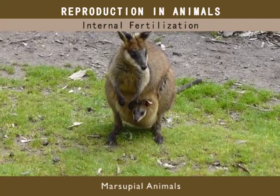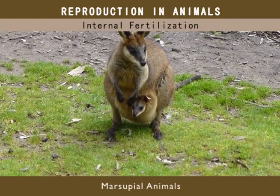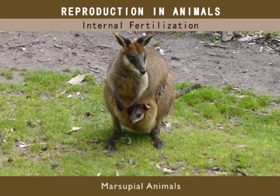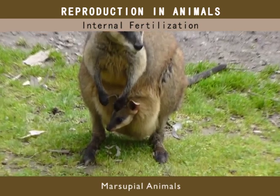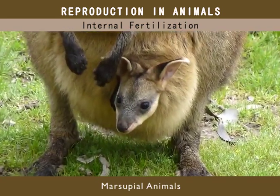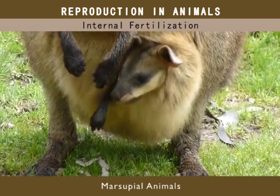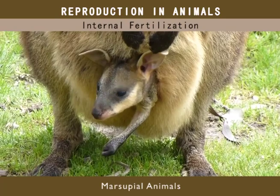Marsupials such as the kangaroo give birth to a preterm baby, which is then placed in a pouch, where it is nursed until it has developed enough to be independent.